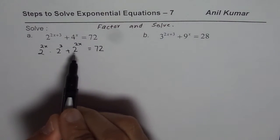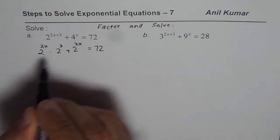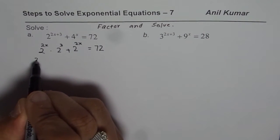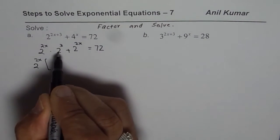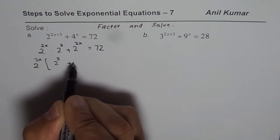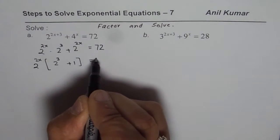Now you can see that 2 to the power of 2x is a common factor. So we will factor this out. So 2 to the power of 2x, and we are left with 2 to the power of 3 plus 1 equals 72.